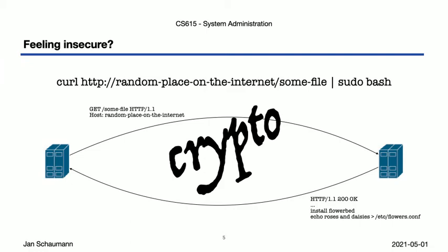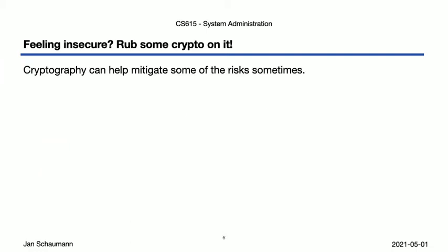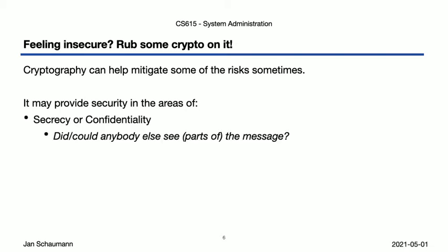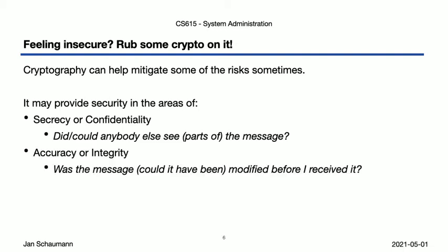But just how exactly does cryptography help us in this scenario? Cryptography can help us, but we have to be clear about what areas it can assist with and which it cannot. Cryptography can provide risk reduction or even threat elimination in the following areas. First, secrecy or confidentiality, helping you answer: did or could anybody else see parts of the message? This is perhaps the most obvious use case, and what most people think about when they hear cryptography.